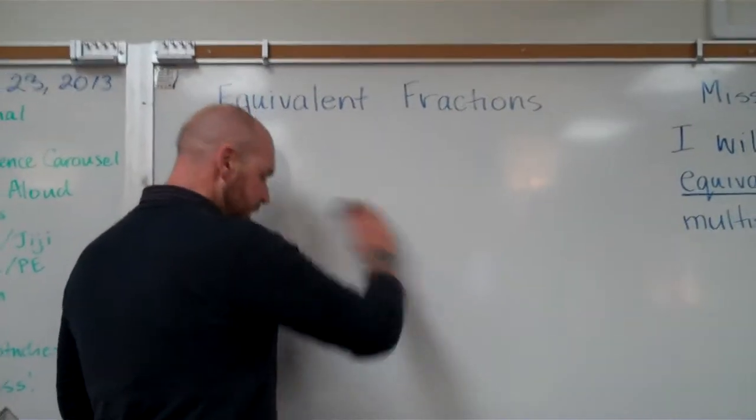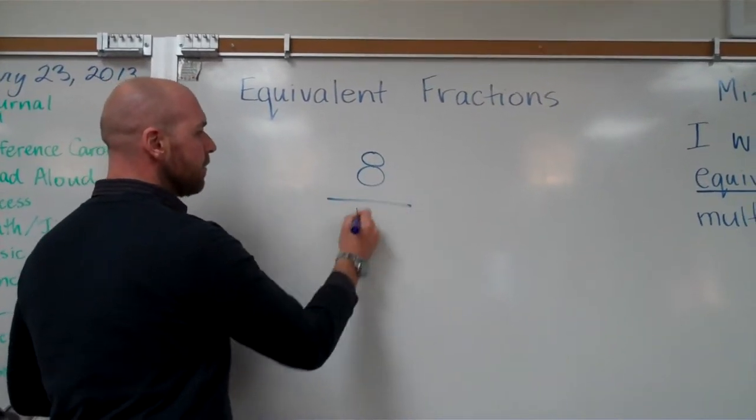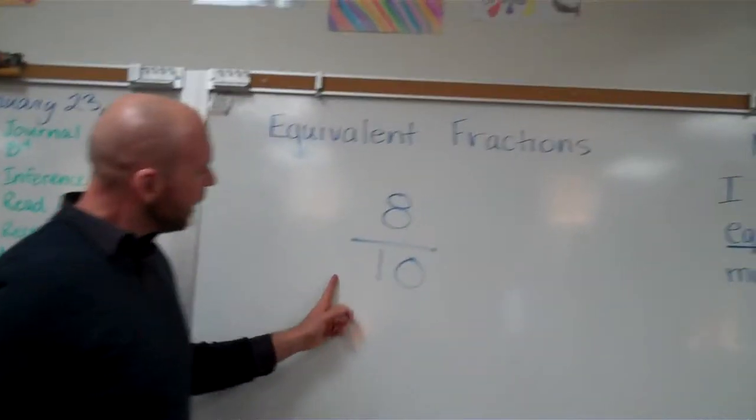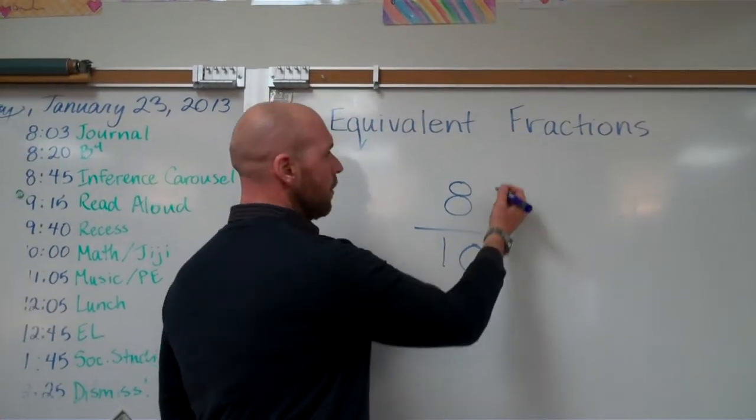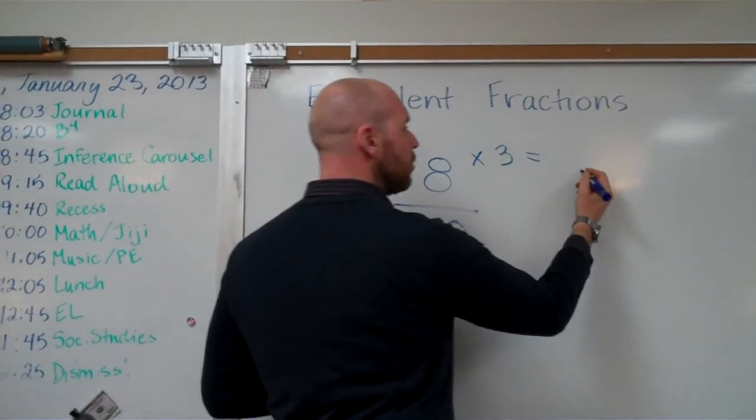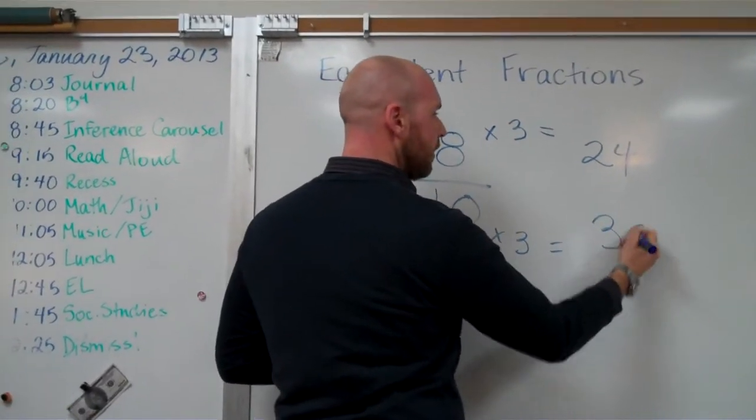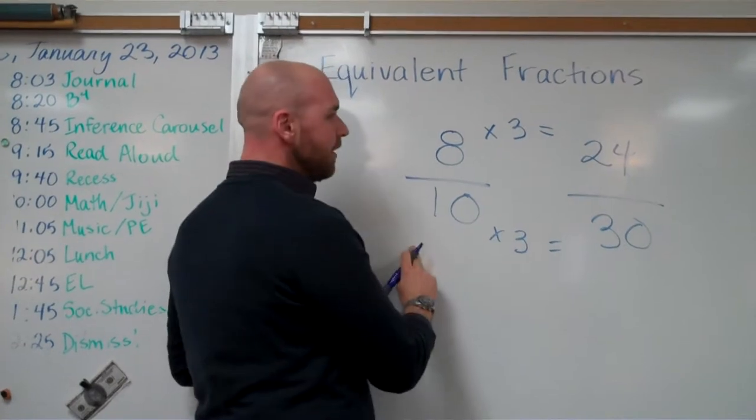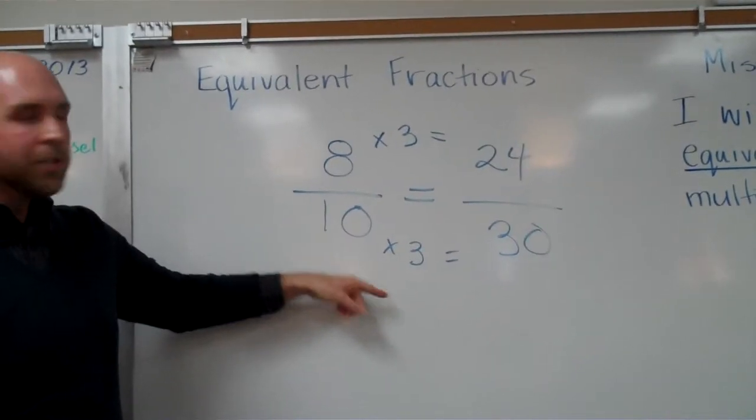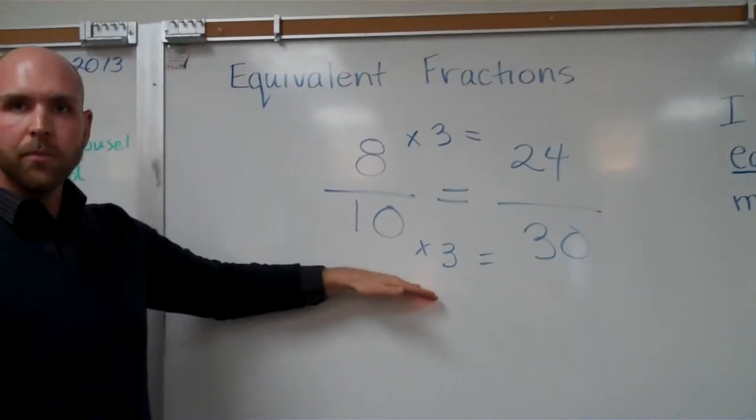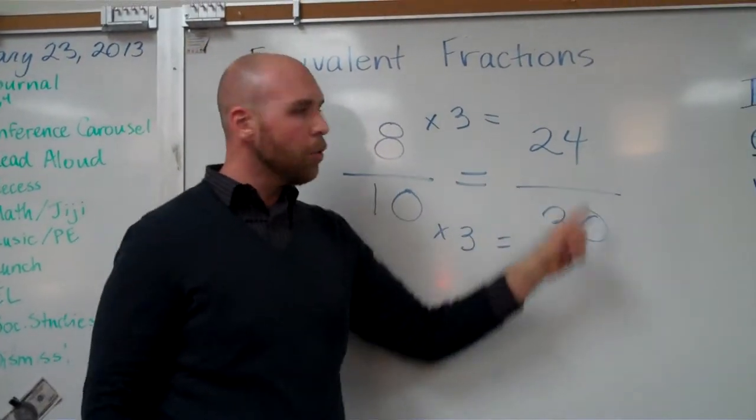But then you'll encounter one like this, so let's take a look at this one. How about eight-tenths? Let's take a look here. Let's try something like three. Eight times three equals twenty-four, ten times three equals thirty. Eight-tenths is equivalent to twenty-four thirtieths. And the reason why this works is what you do to the top, you have to do to the bottom. At least, as long as you have the same number, you will always get an equivalent fraction.